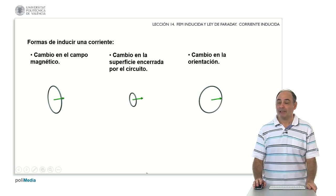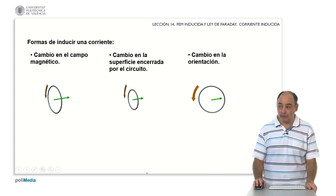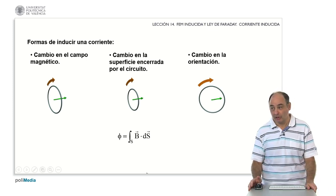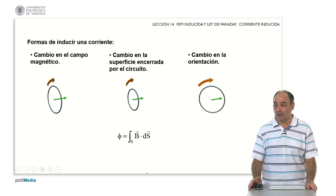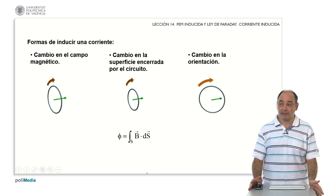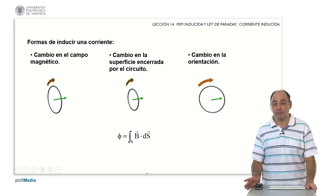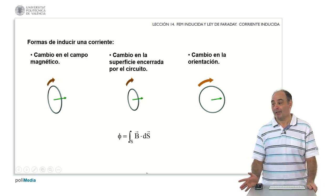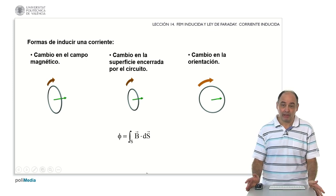What do all three of these ways of inducing a current have in common? Well, all three are related to the concept of integral flux through the electric circuit of the magnetic field. Why? Because in the case on the left, a change in the magnetic field — clearly, when B changes, the result of the integral changes. If the surface changes, the integration limit changes, S changes, and that is also a different result. And if the orientation changes, the dot product will change, and therefore the result will also change.